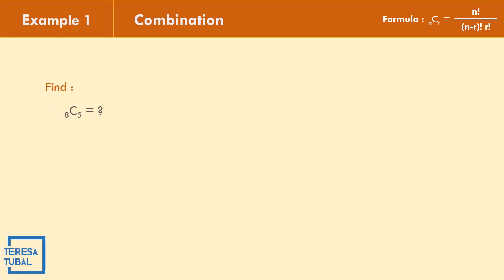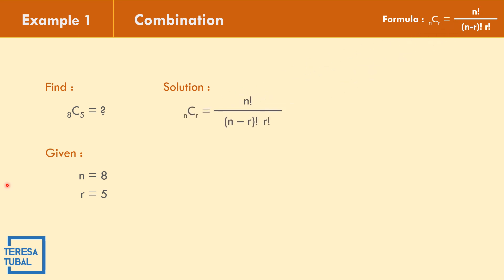In example number one, let us find the combination of 8 objects taken 5 at a time. The given values are n equal to 8 and r equal to 5. We use the formula: C(n,r) equals n factorial over the quantity (n minus r) factorial times r factorial. Substituting: n equals 8 factorial over (8 minus 5) factorial times 5 factorial.